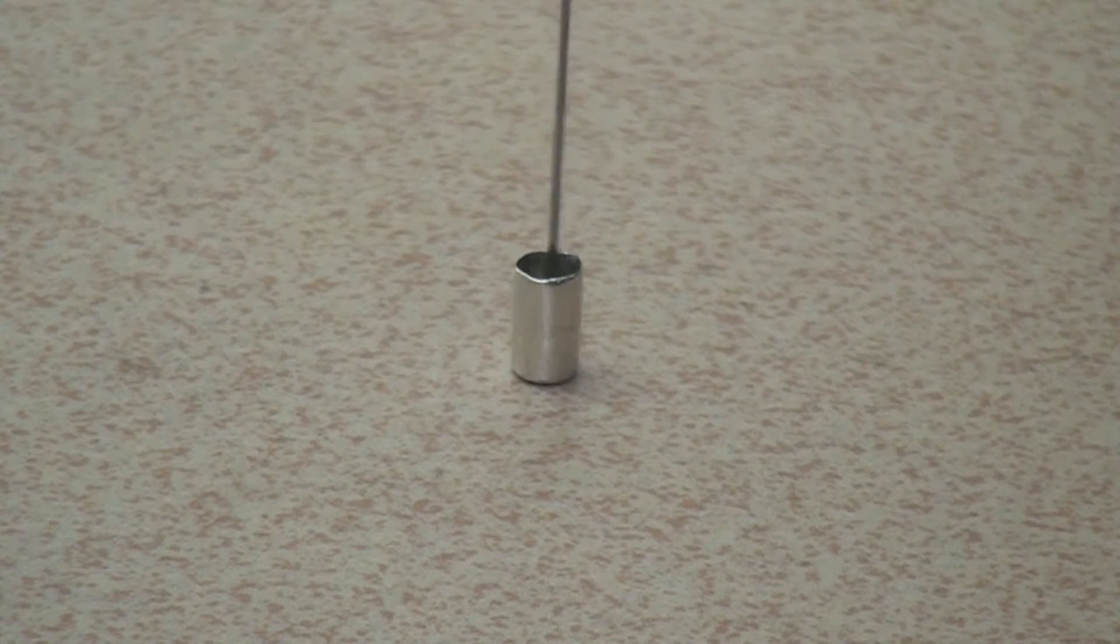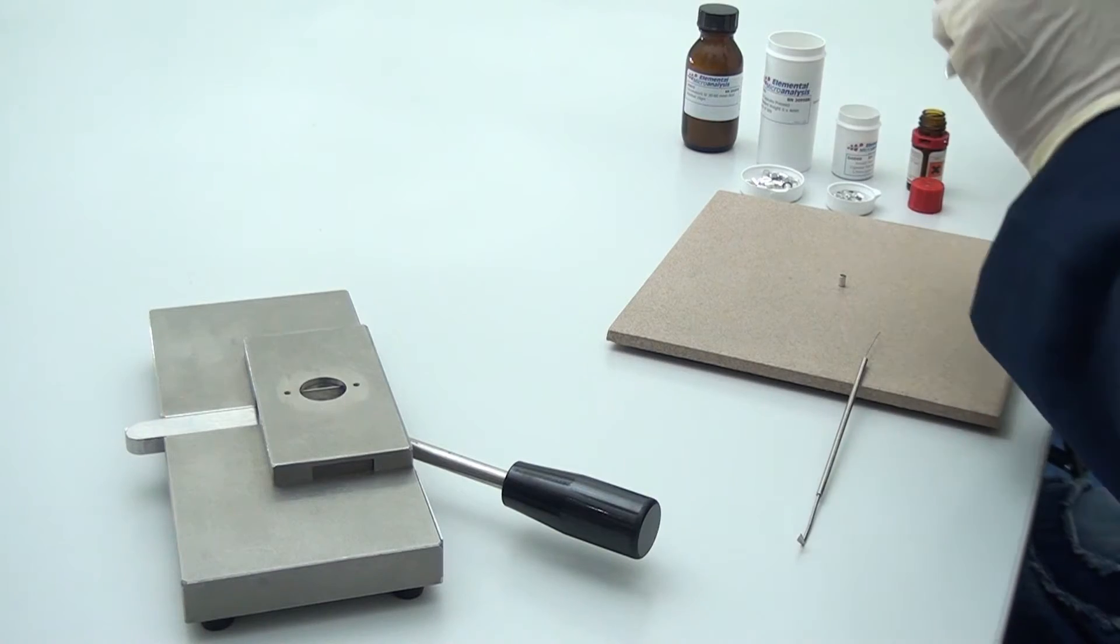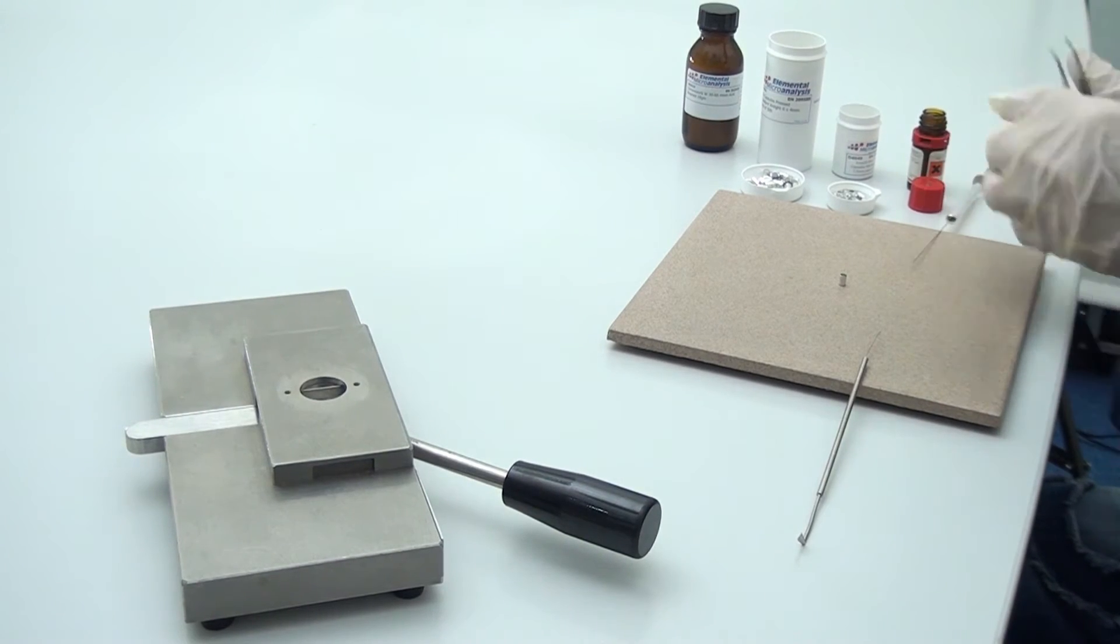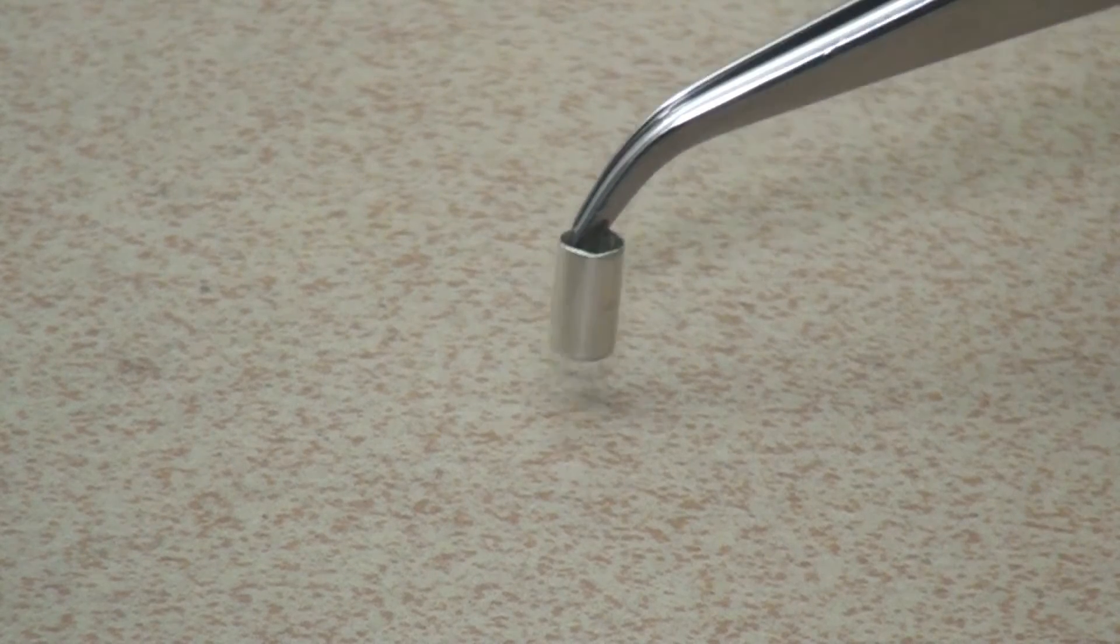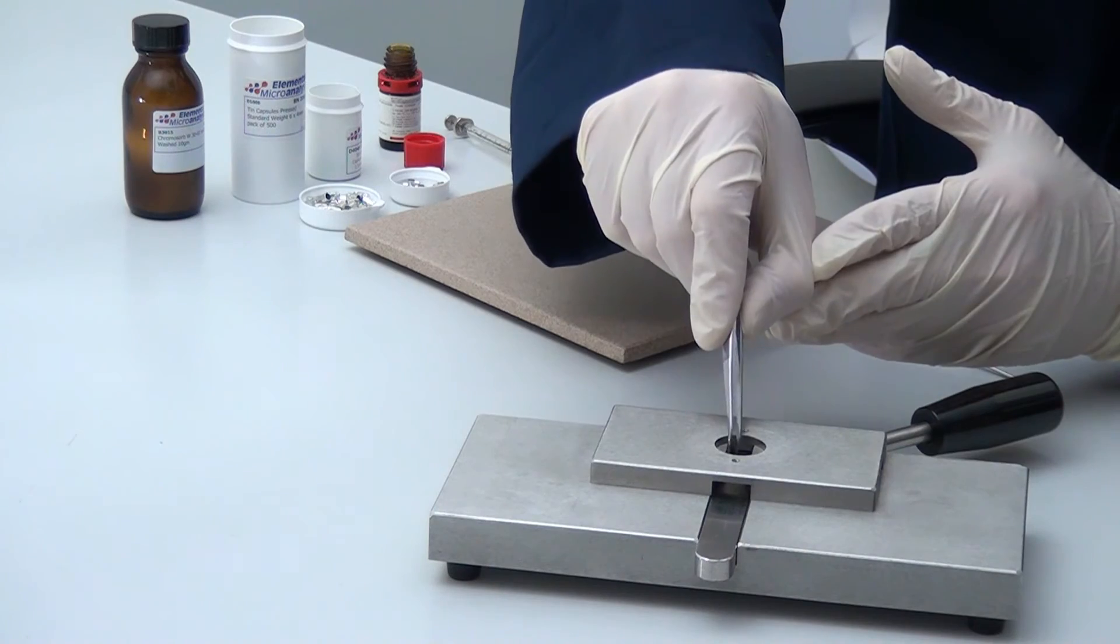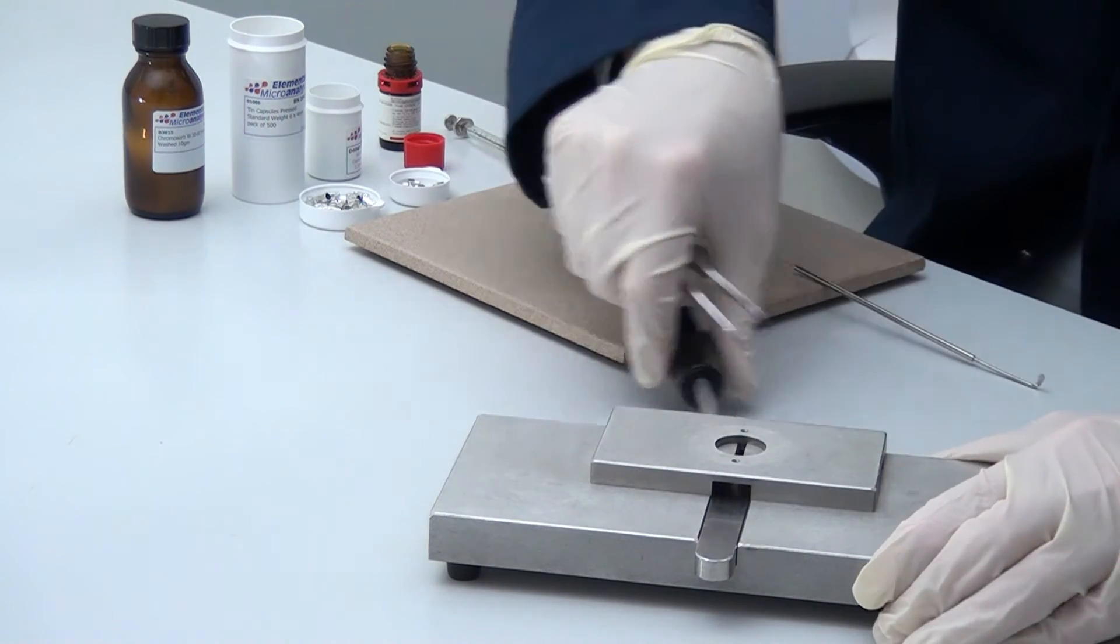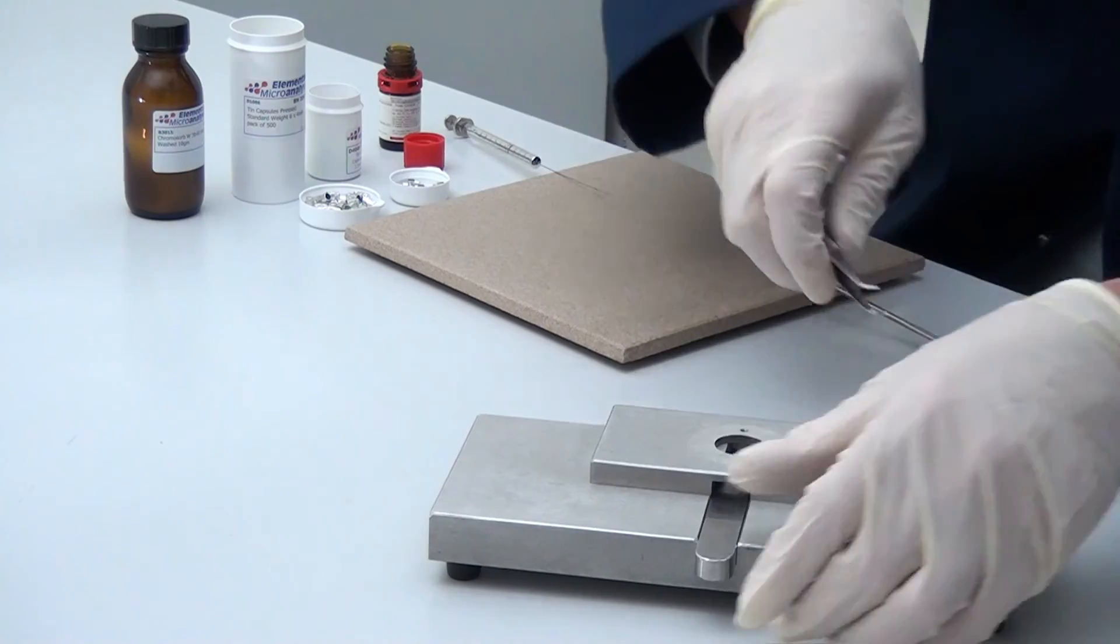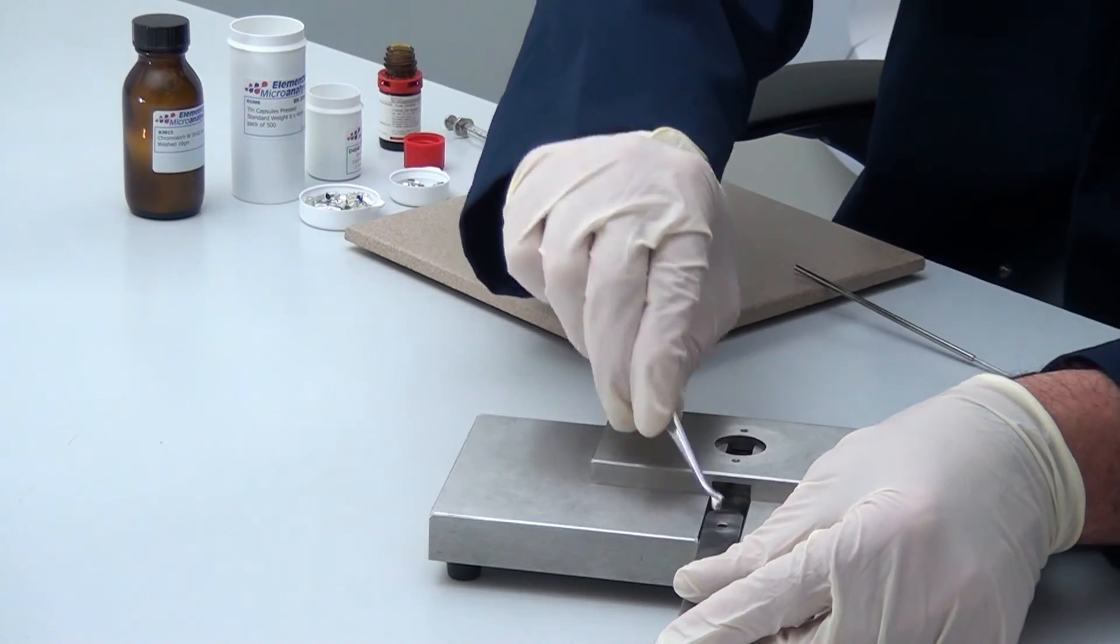A steady hand is needed to syringe or pipette the liquid into the container. The capsule is placed in the sealing device and operating the handle creates a hermetic seal and prevents the liquid leaking out.